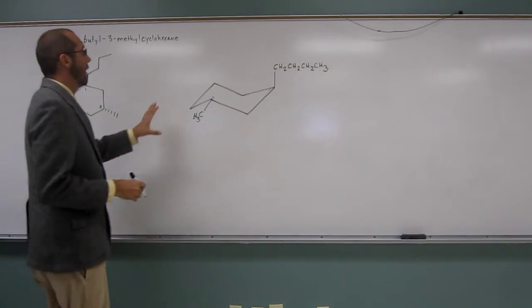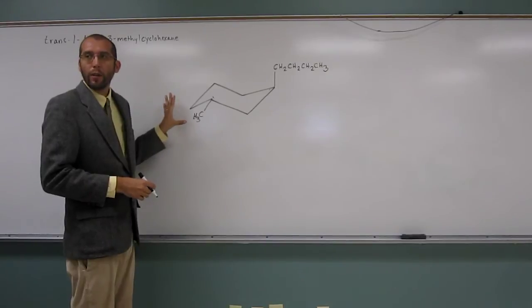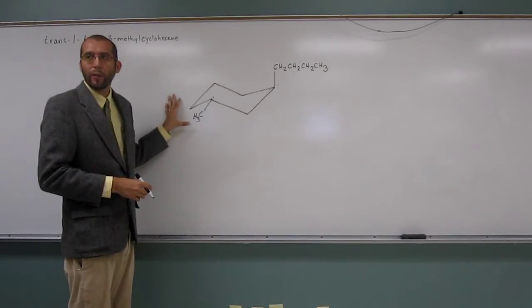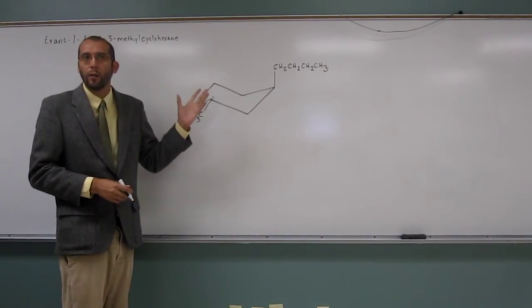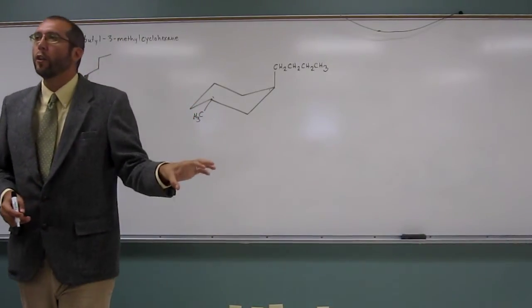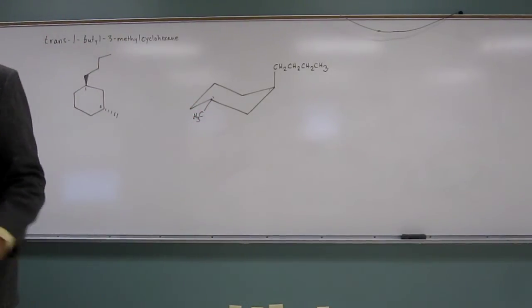So, we've got to ask ourselves, is this the most stable or less stable conformation, and how do we know? Remember, we want the smaller group to be in a what position? Axial. Axial position. Do we have the small group in an axial position here? No. So, what are we going to do?